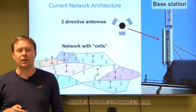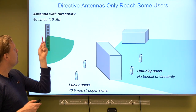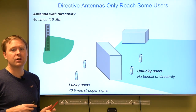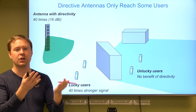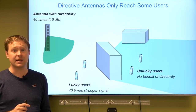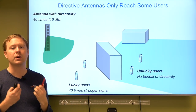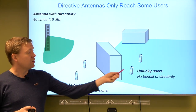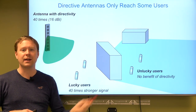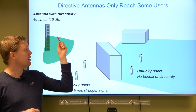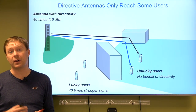With a typical directive antenna you might have a signal 40 times stronger right in front of it than you would get from an omnidirectional antenna — that is also called 16 dBi. The lucky users standing directly in front of the base station get this 40× stronger signal. But not every user benefits — some users are in the right direction but blocked by an object, so the signal needs to bounce another way and they don't benefit from the directivity at all.